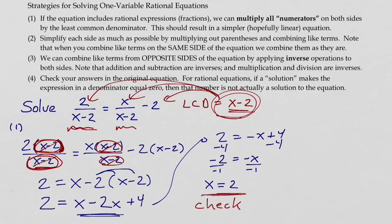And this is really important to do for rational equations, because it's possible that we might end up with a solution, but it might create zero in the denominator of the original expression.